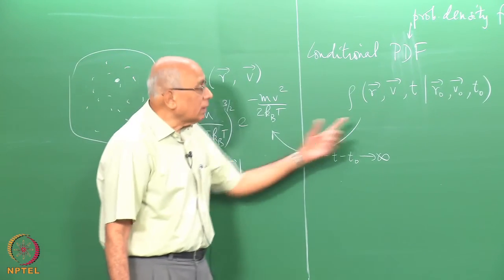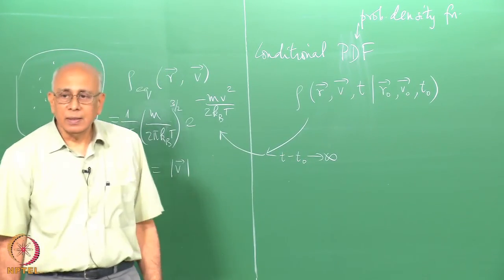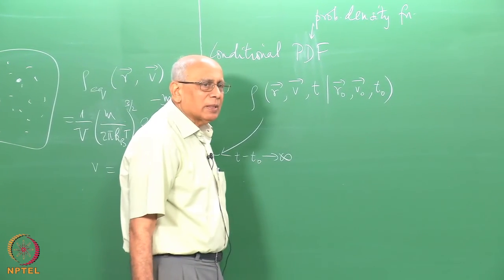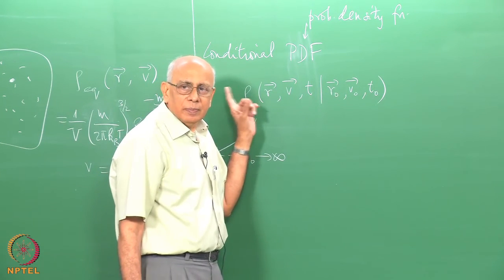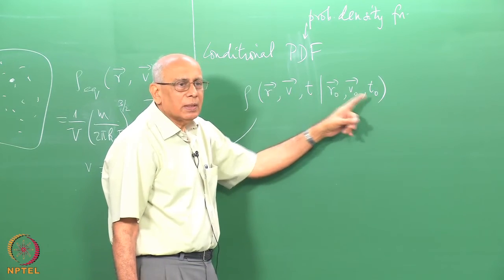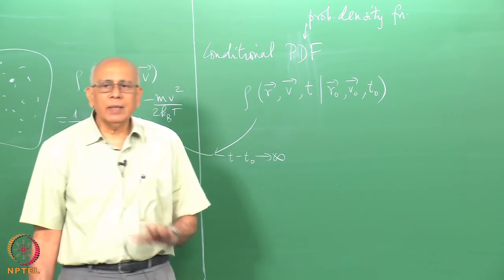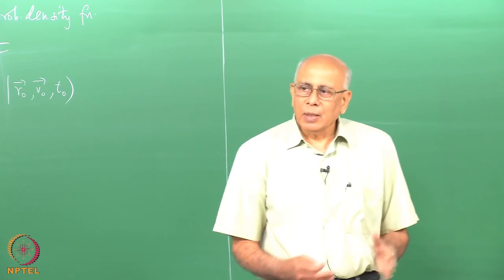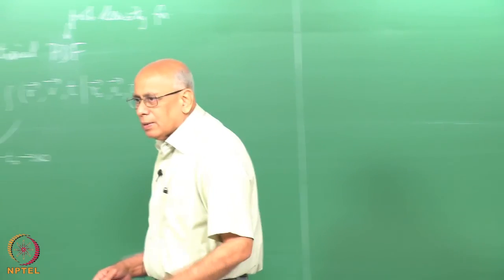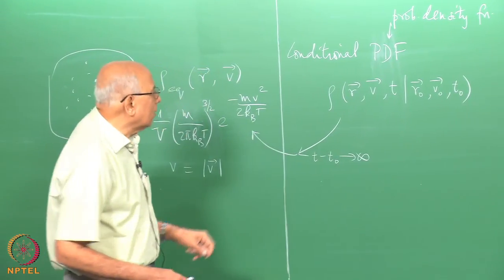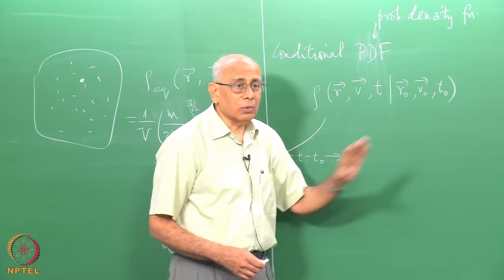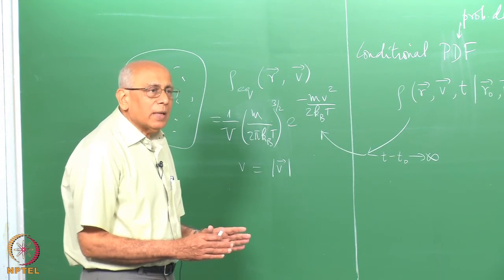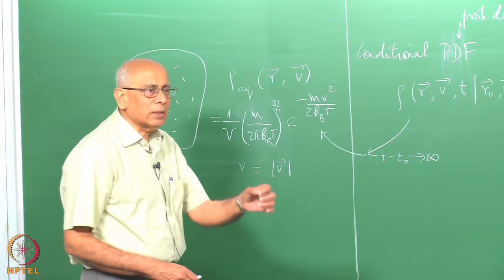The hard question is what is this function for arbitrary values of t, not necessarily t minus t_0 going to infinity. It is also clear that if the system is in thermal equilibrium, it does not matter when I start the clock at t_0, and this whole quantity will be a function only of t minus t_0, only the elapsed time. Because when I start the clock is completely irrelevant since the system is already in equilibrium and the process is stationary. So I might as well set t_0 equal to zero.